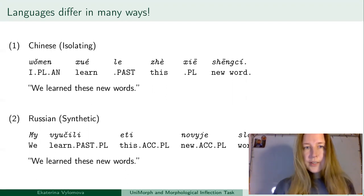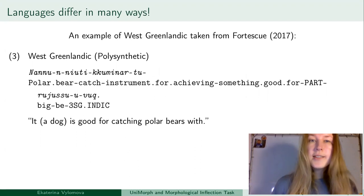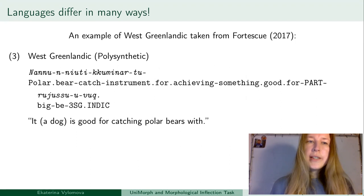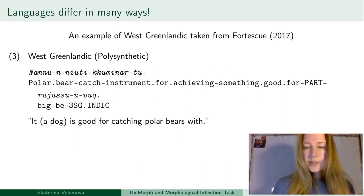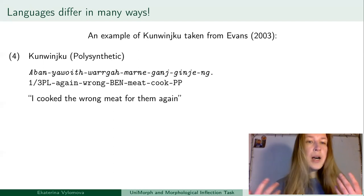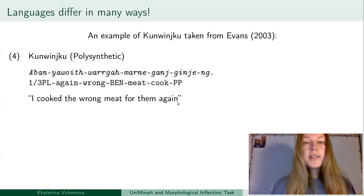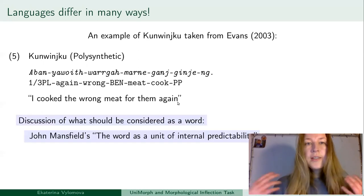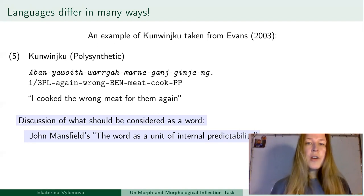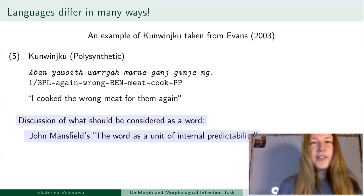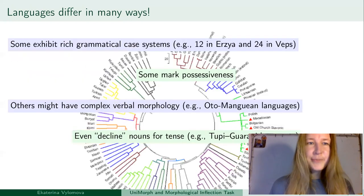If we continue toward this direction, we end up in polysynthetic languages. Here is an example from West Greenlandic, where the meaning of a whole sentence can be expressed within a single word. Or here is an example from Kunwinku, a language from the north of Australia, where again we see that the meaning of a sentence — 'I cooked the wrong meat for them again' — is expressed within a single word. This raises the question of what a word is, cross-linguistically. I would advise you to read the recent article by John Mansfield on the notion of words across languages.